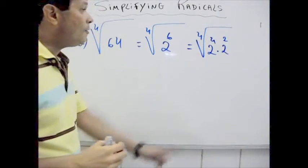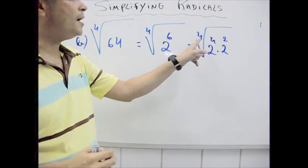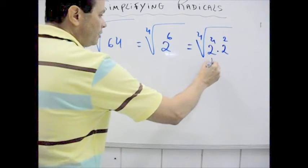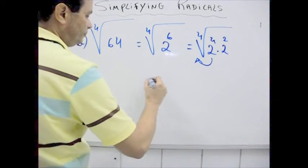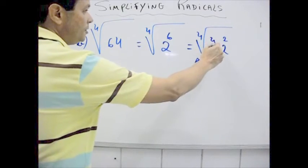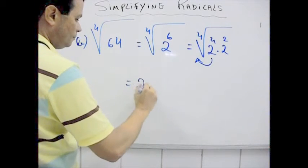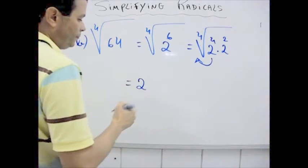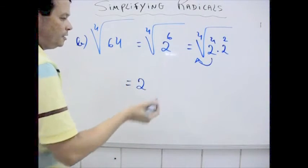Now, this exponent is divisible by 4, so I can put it out like this: 4 divided by 4 is 1. It's not necessary to put 1 here, you know.